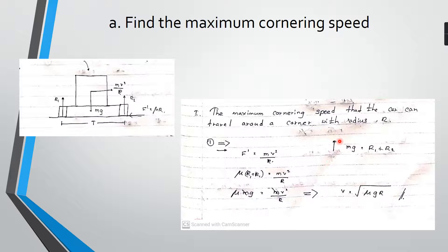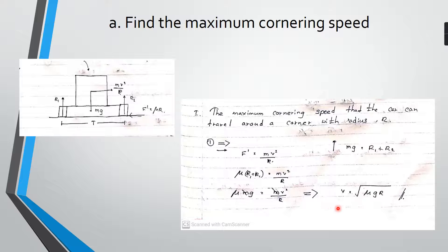Solving these we can get the answer. In the vertical direction we have only reaction forces and the weight of the mass, so the weight of the mass is equal to the reaction forces. Substituting those reaction forces, we can get the final answer. The maximum cornering speed is equal to the square root of μgr. That is our first part answer.